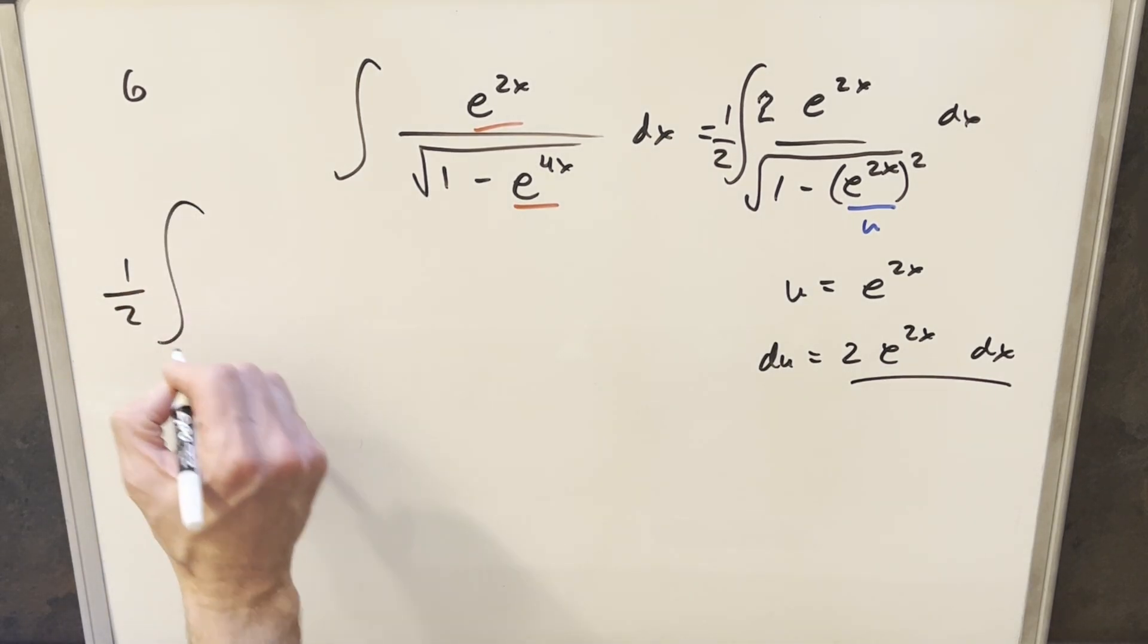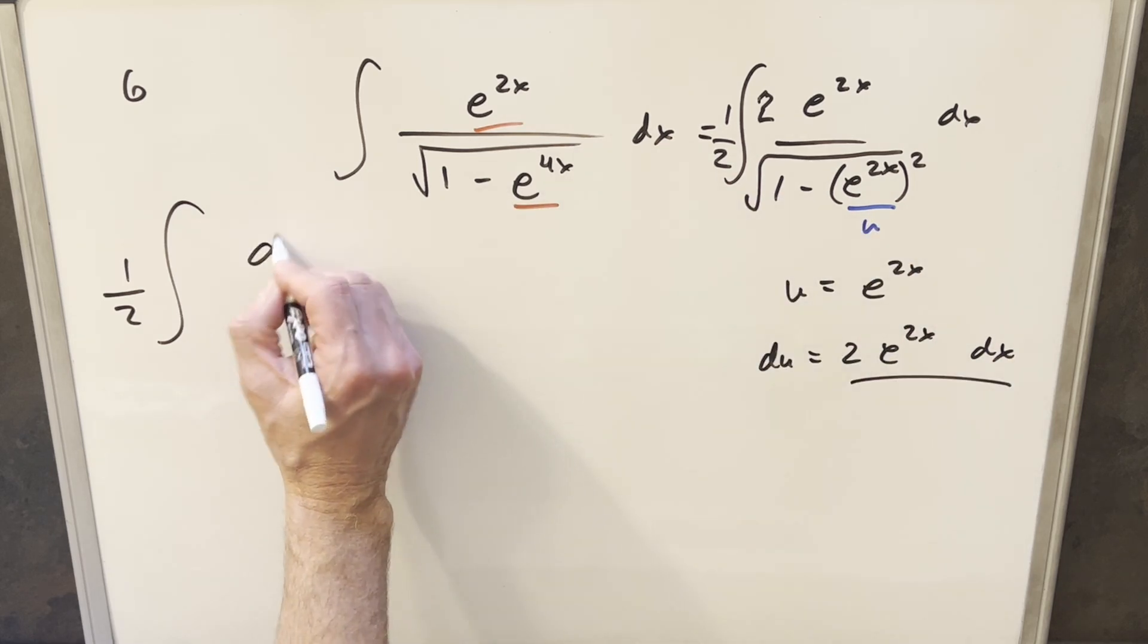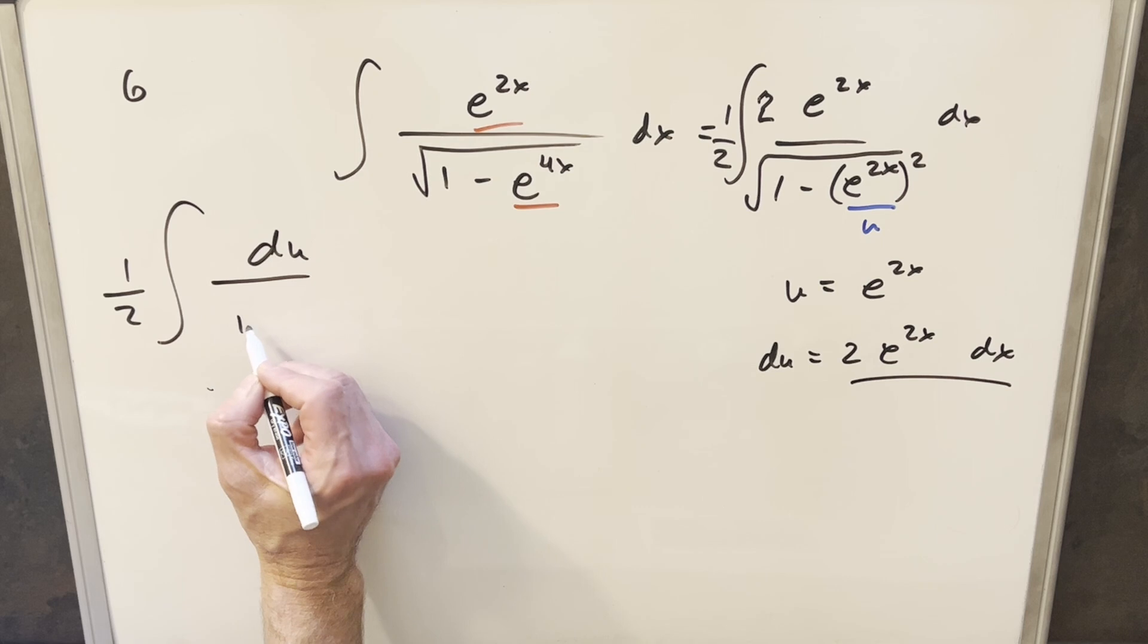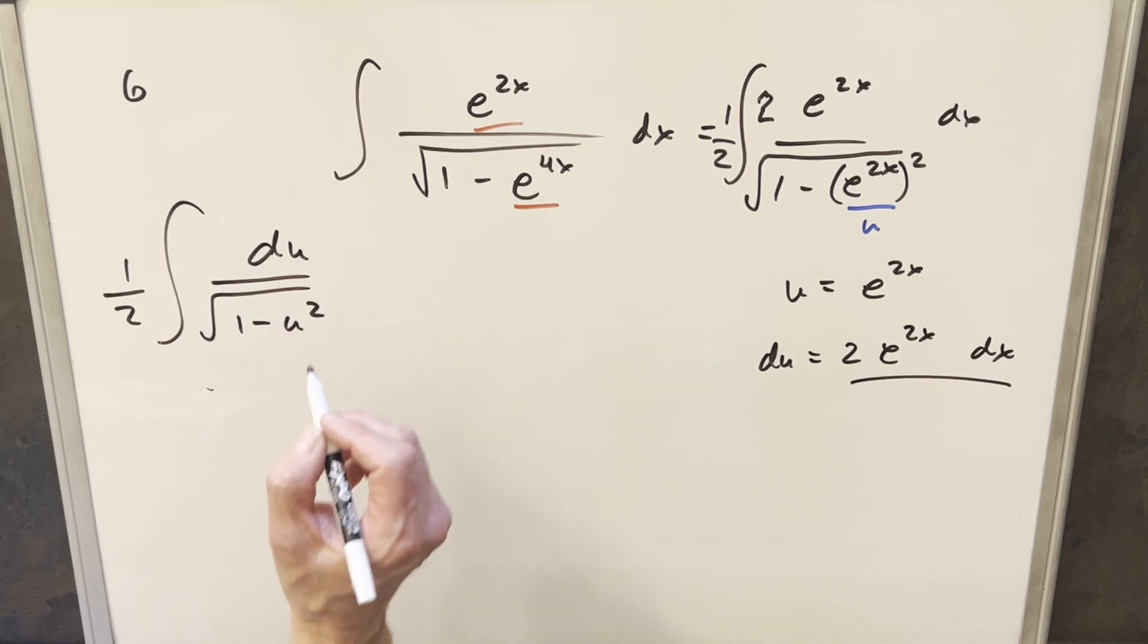So then we'll just go ahead with this. I've got the 1 half in front. Again, we have du in the numerator. And then this denominator is going to become 1 minus u squared under the radical.